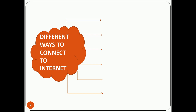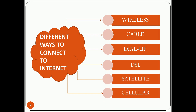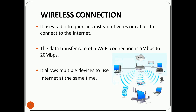There are different ways to connect to the internet: wireless connection, cable connection, dial-up connection, DSL connection, satellite connection, and cellular connection. A wireless connection uses radio frequencies instead of wires or cables to connect to the internet, so wires are not required.